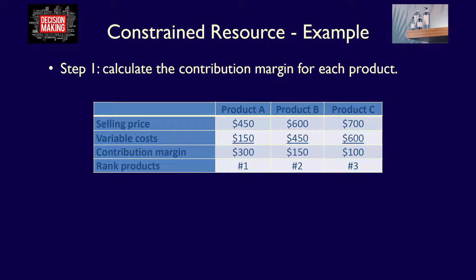Given the contribution margins calculated, and knowing that companies earn more income by selling products with higher contribution margins, it's clear that the company should sell product A first, product B second, and product C last. In fact, if there is enough demand, the company should produce only product A and forget about producing either of the other two products, given that their contribution margins are lower.